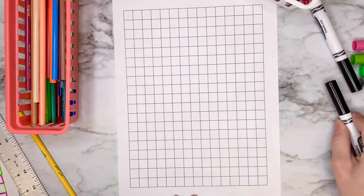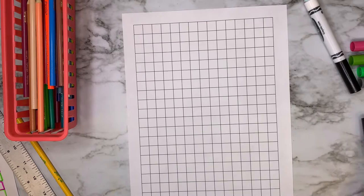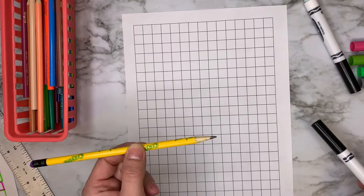All right, let's go ahead and get started. Now remember, if you don't have gridded paper at home and you don't have a printer, you can always use your ruler and a pencil to make your grids. Now for this, I'm going to be using a marker so that you can see better, but you are going to want to start off with your pencil because you can erase your mistakes.